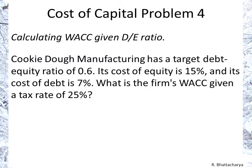Problem four: cost of capital. Calculate the weighted average cost of capital given the debt-to-equity ratio. Cookie Dough Manufacturing has a target debt-equity ratio of 0.6. Its cost of equity is 15% and its cost of debt is 7%. What is the firm's weighted average cost of capital given a tax rate of 25%?